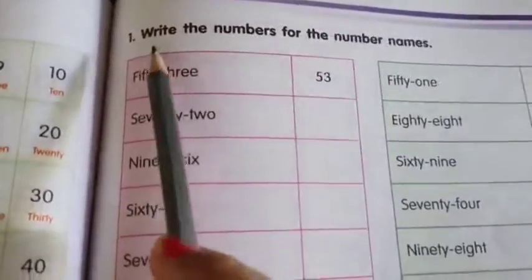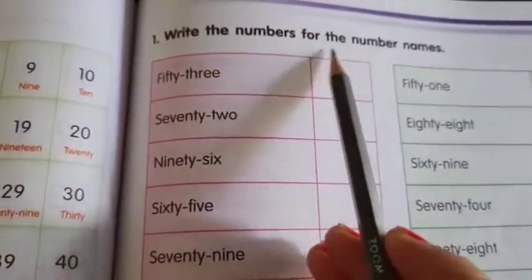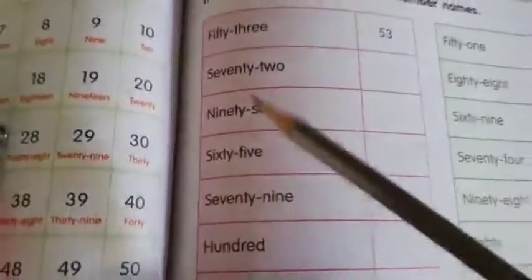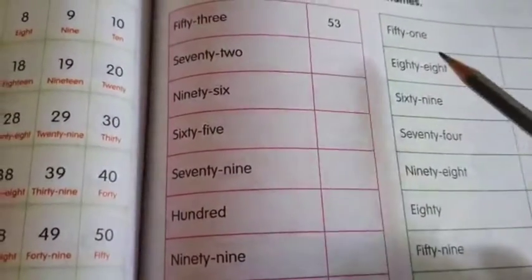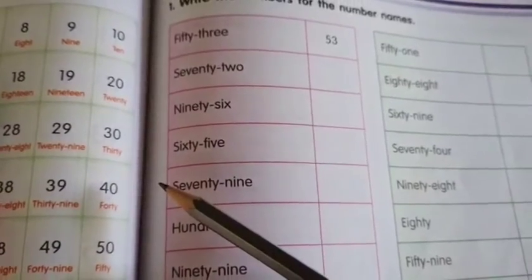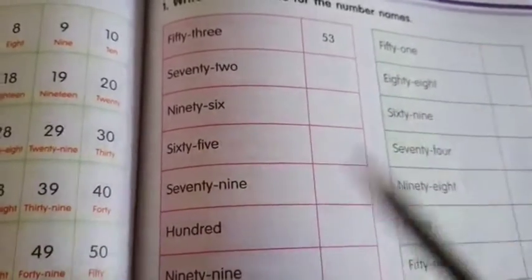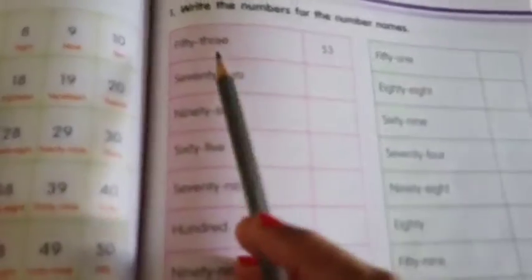Page number 77. Question number 1. Write the numbers for the number names. Okay, so you can see number names are given here and you have to write down the numbers on their right hand side.